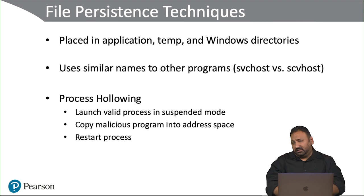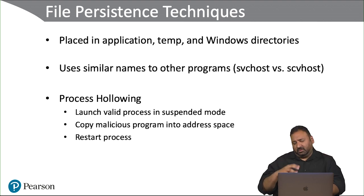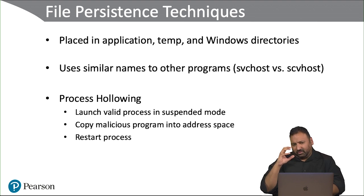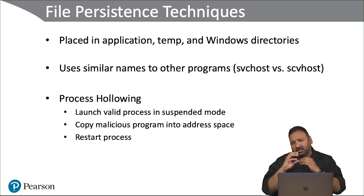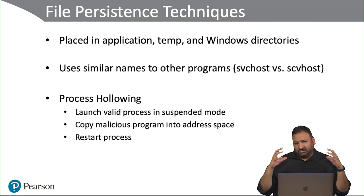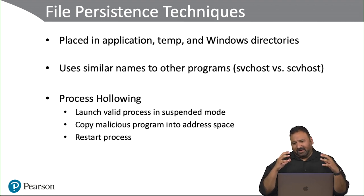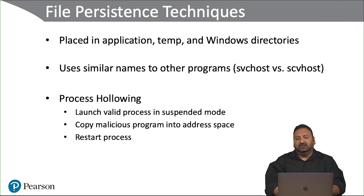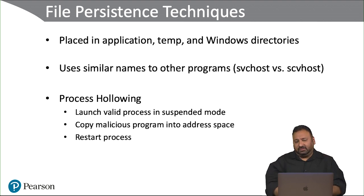There's also a technique called process hollowing. What that is: malware launches a valid process in suspended mode — so it launches a valid process but suspends it so it doesn't really run. Then it copies the malicious program into that same code space and restarts it. That way it looks like a legitimate valid process is running, but the code behind it is now malicious. It's another persistence technique used to ensure malware authors stay persistent on a system.